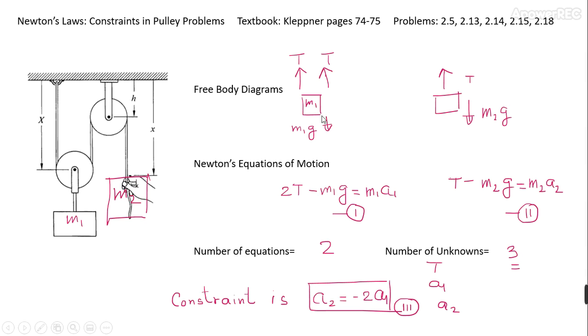So this is the free body diagram of m1, where the string is a single string once again, and the tension in the string is the same throughout. The pulleys are massless, so we have a string which is pulling this pulley up from this side as well as from this side, and therefore two tensile forces in the upward direction. Once again, the tension forces get a positive sign and the mg gets a negative sign. These are the equations of motion.